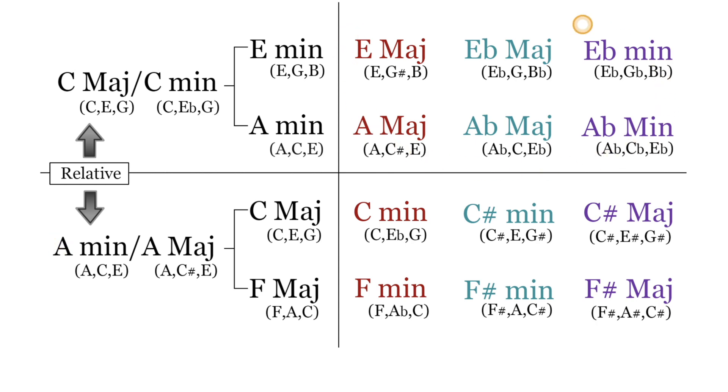These six chords up in the top right section are the chromatic mediants in relation to C major, whereas these six chords in the bottom right section are the chromatic mediant chords for the key of A minor. Let's first start with the key of C major.